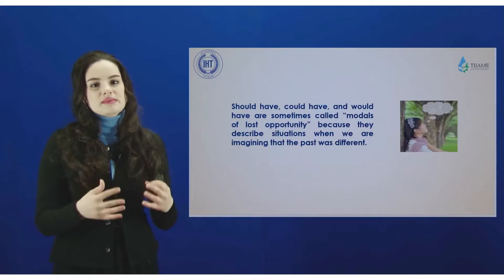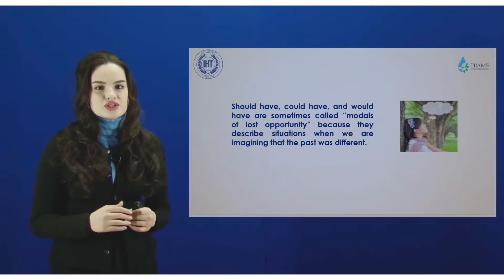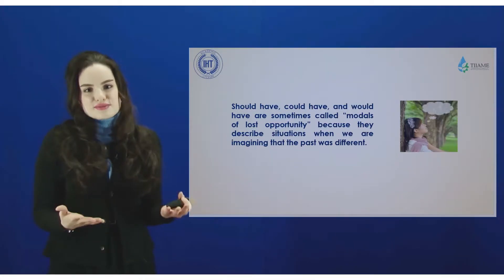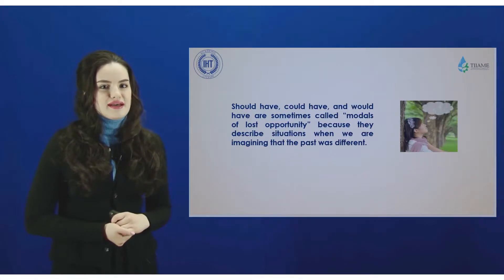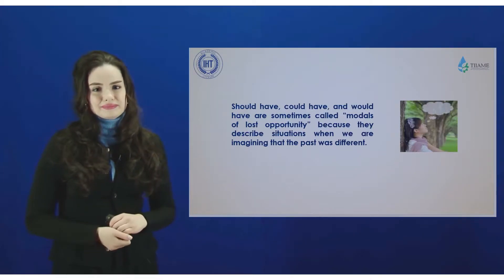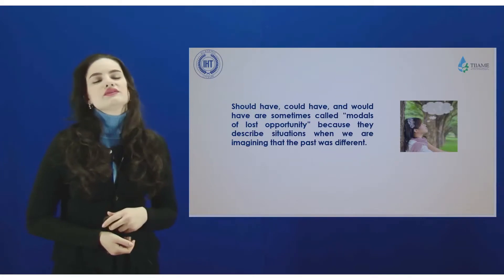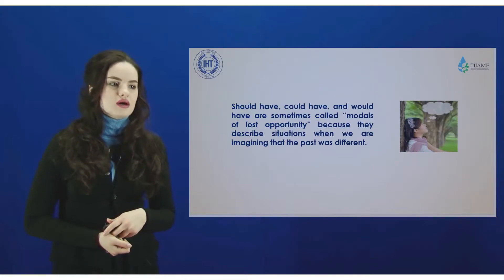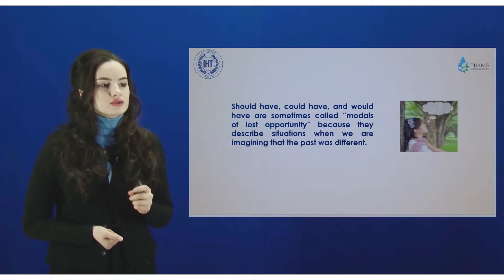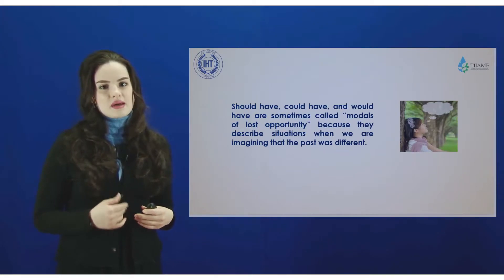She's dreaming about some past events. She didn't turn something into life. That's why now she has some regrets about these dreams. For this purpose, you should use verbs like should have, could have, and of course would have, in order to express some regret.